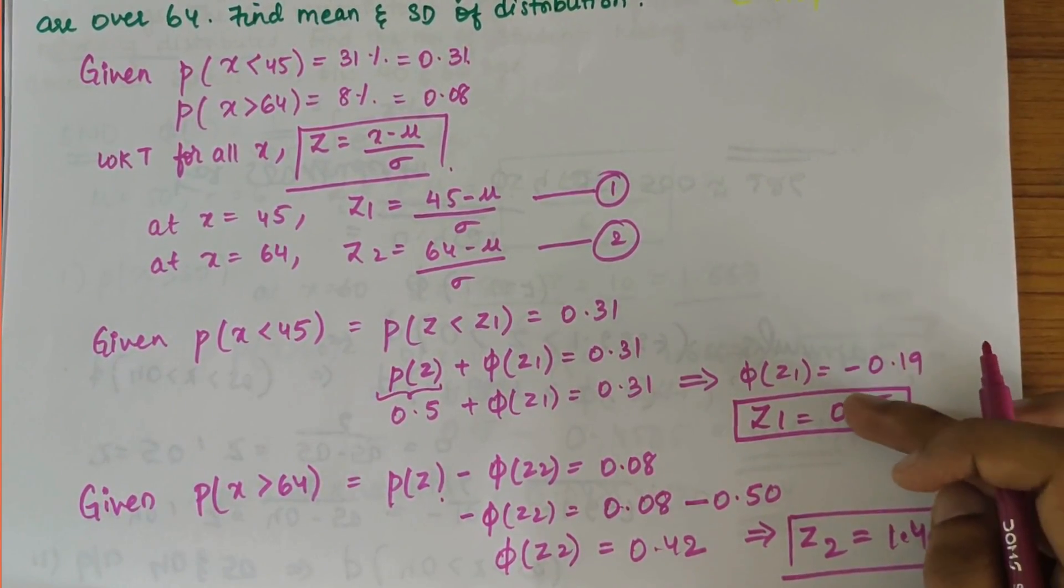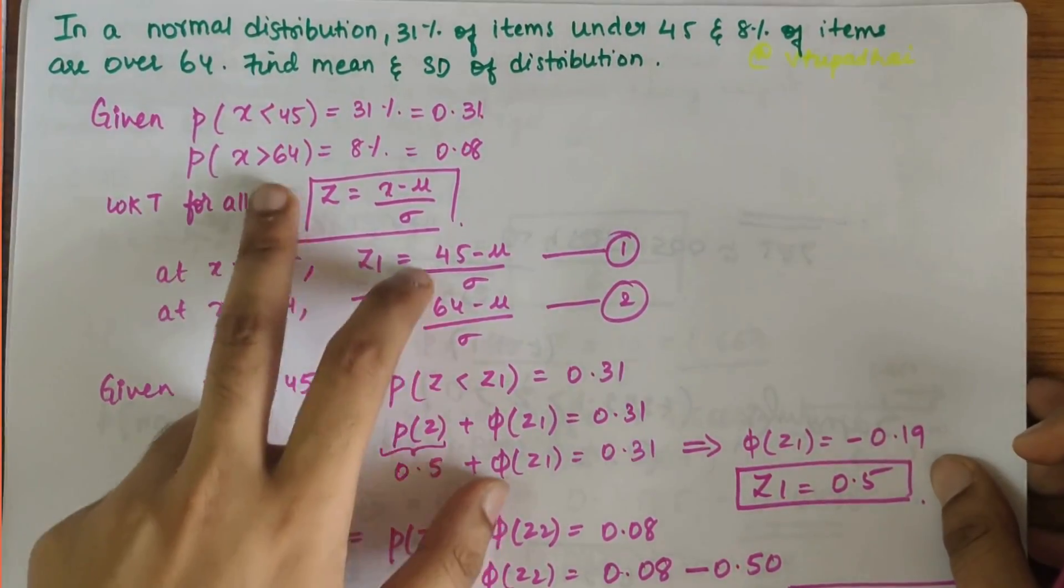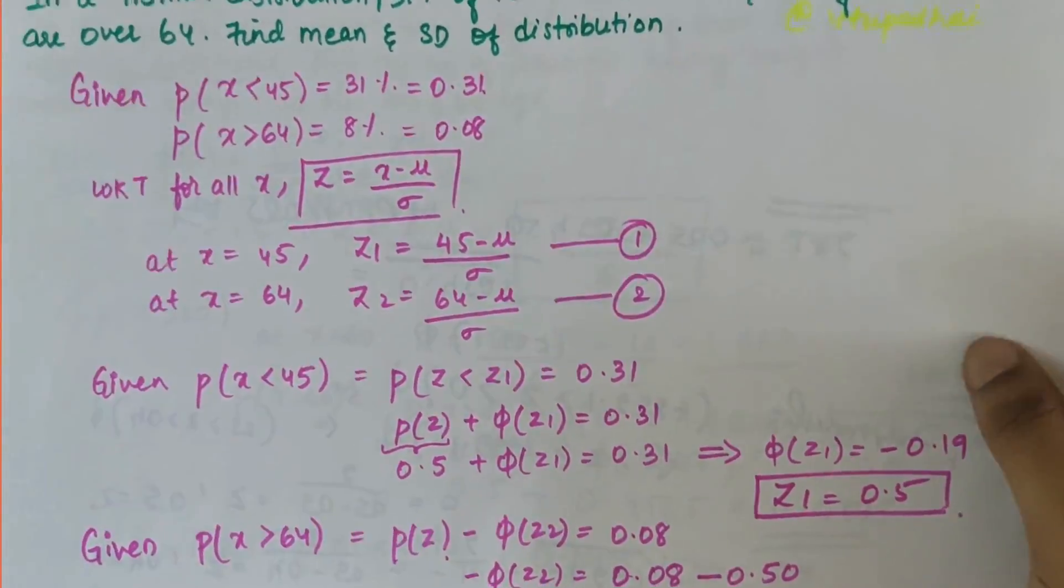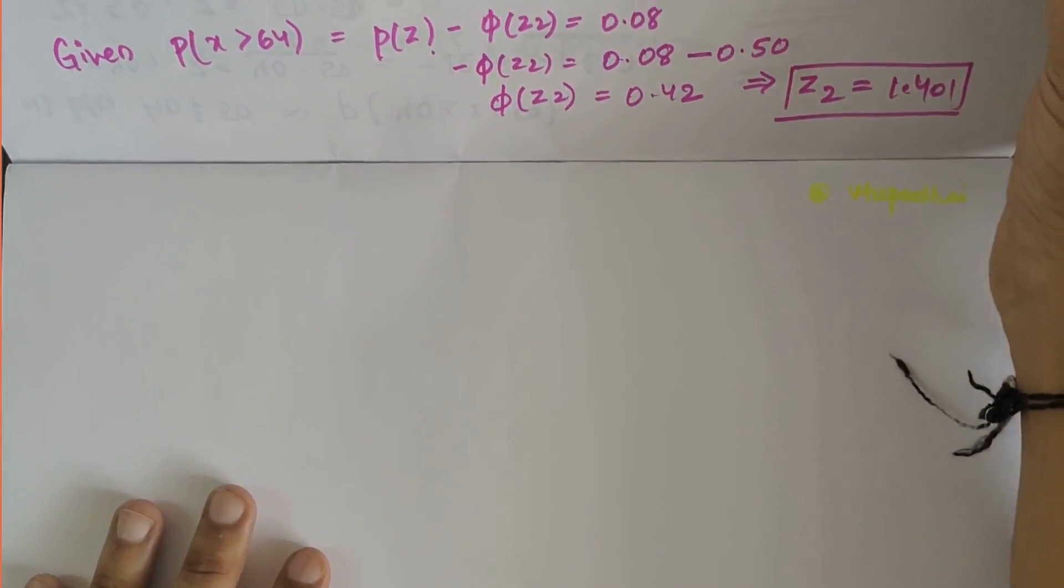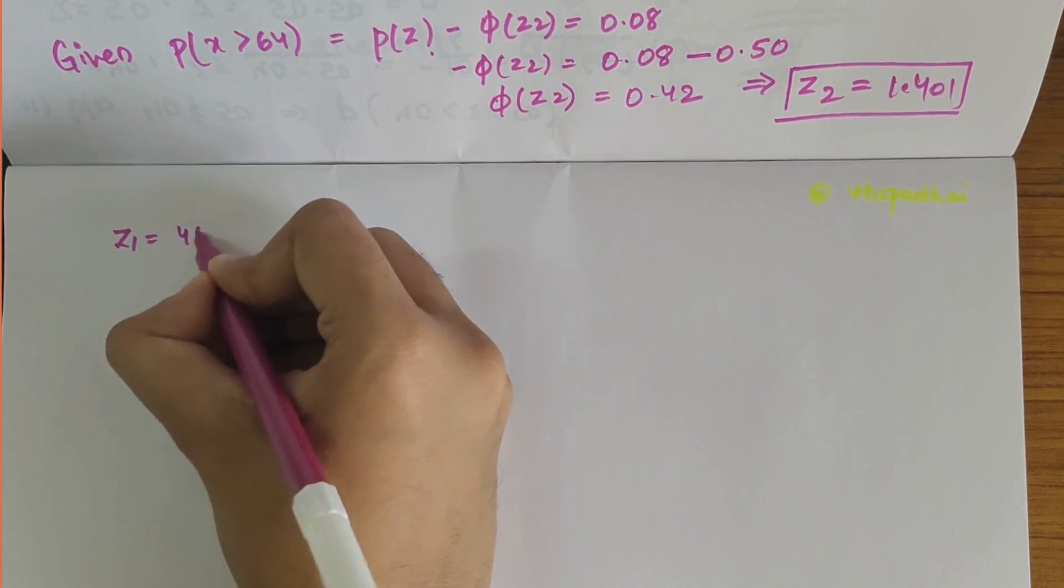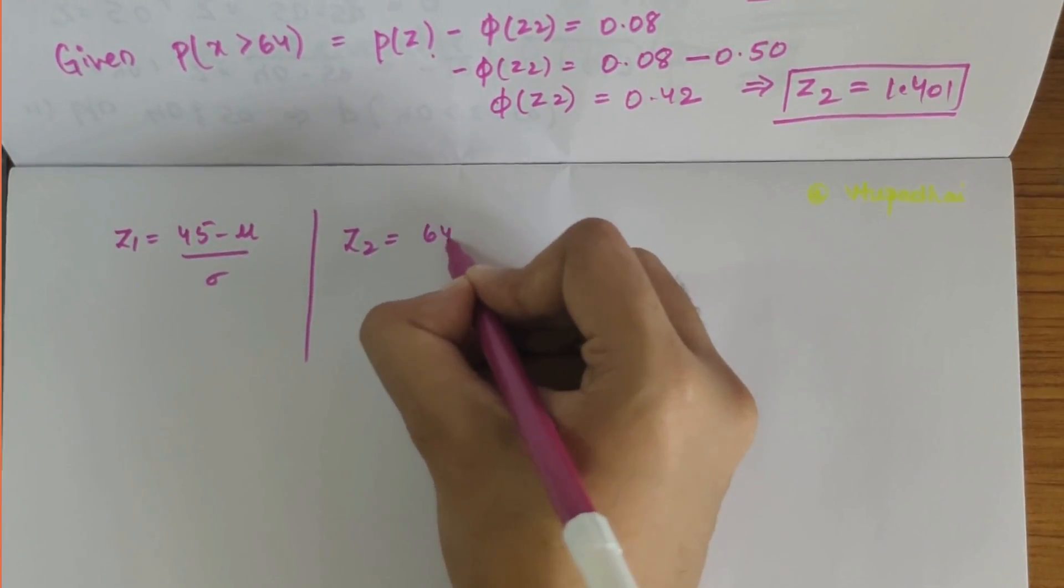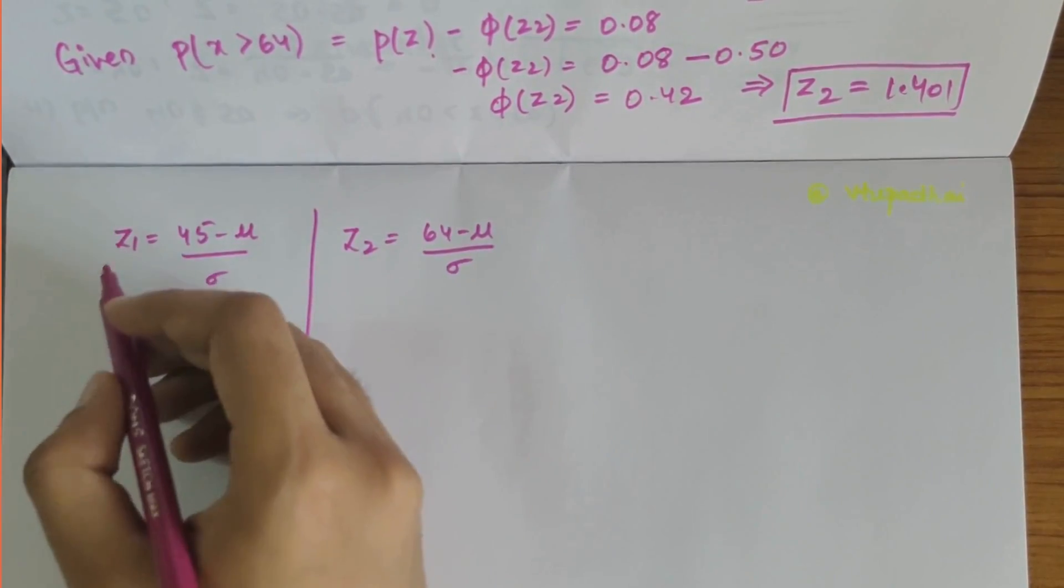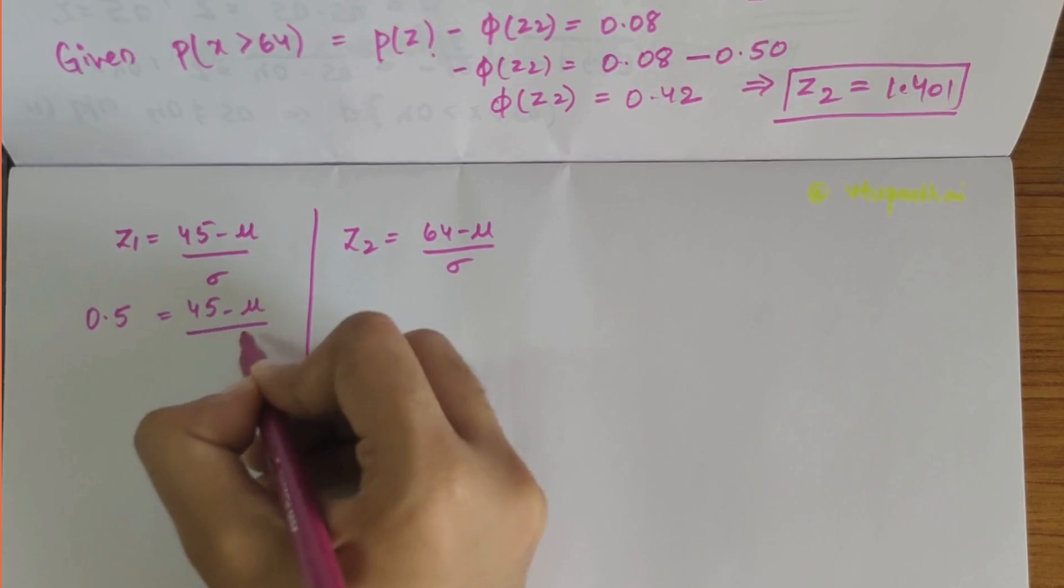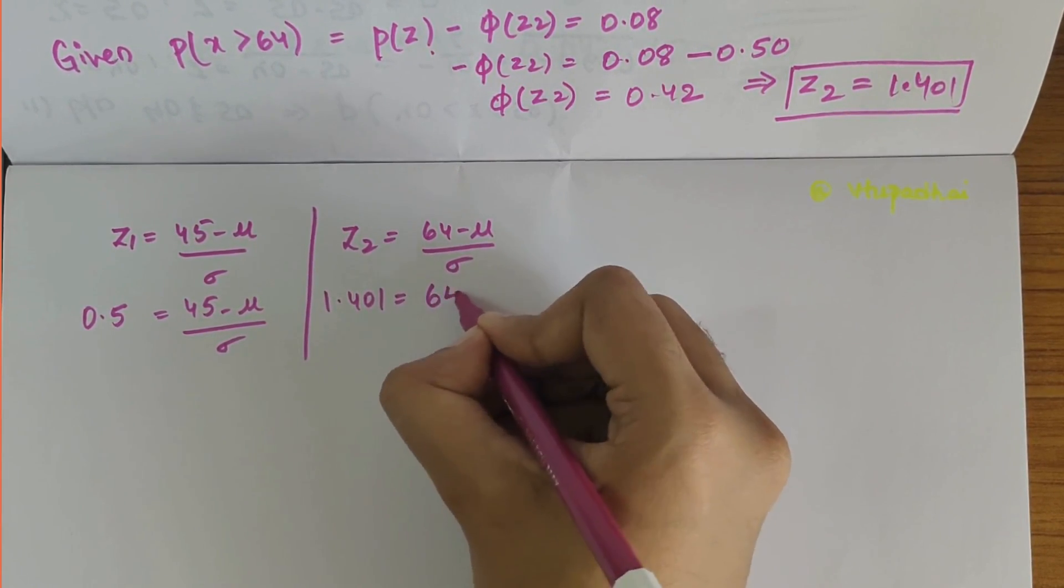Once we have found the values of Z1 and Z2, we have to substitute them in the equations to get μ and σ. So Z1 = (45 - μ)/σ = 0.5, and Z2 = (64 - μ)/σ = 1.401.